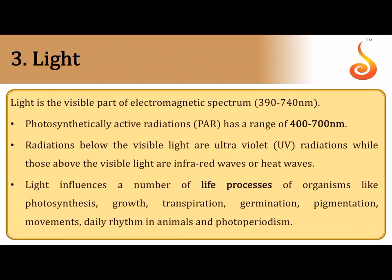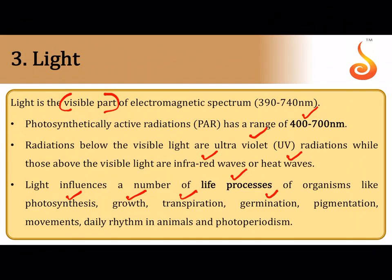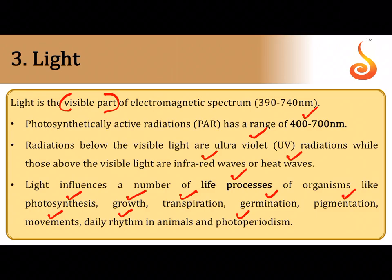Light — we are mostly concerned with the visible part of light. The range that helps in photosynthesis is about 400 to 700 nanometers; this range within the visible light is referred to as photosynthetically active radiation (PAR). We also have ultraviolet radiation and infrared or heat radiations within the electromagnetic spectrum. Light influences many life processes including photosynthesis, growth, transpiration, germination, pigmentation, movements of animals and plants, daily or diurnal rhythm, and photoperiodism — a specific duration of light required for flowering in plants.